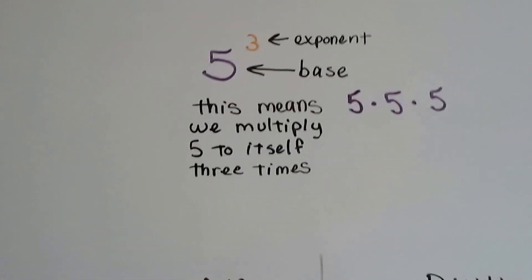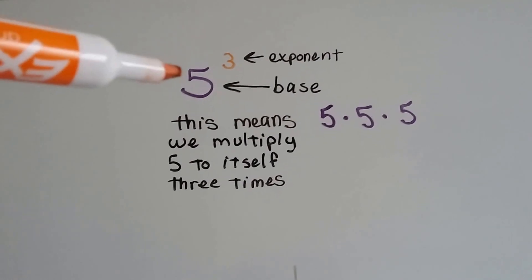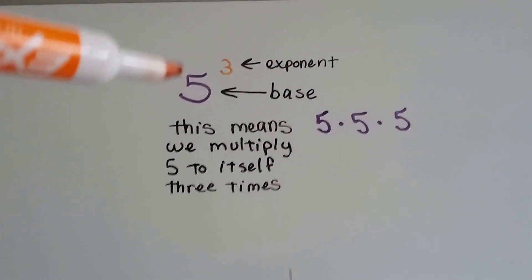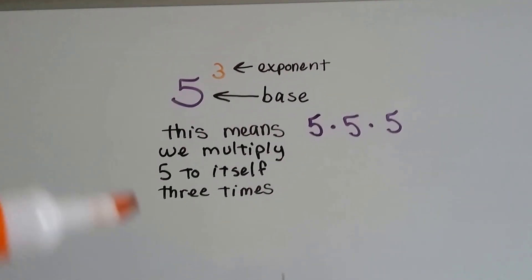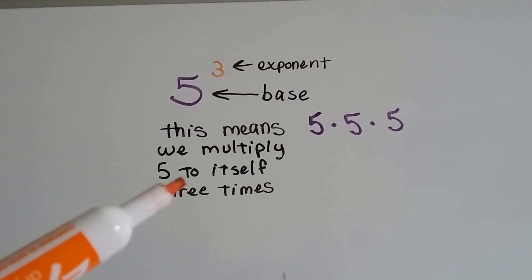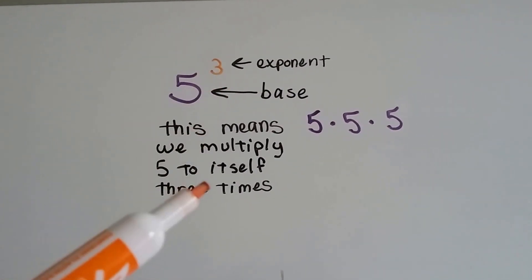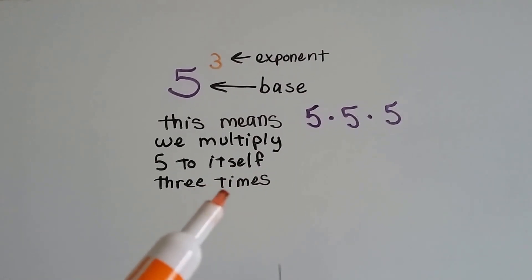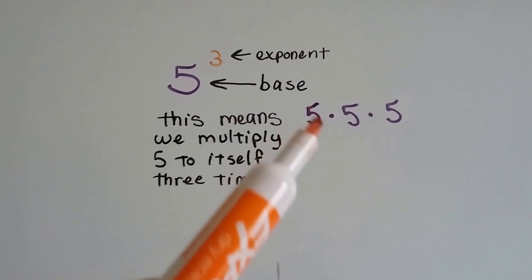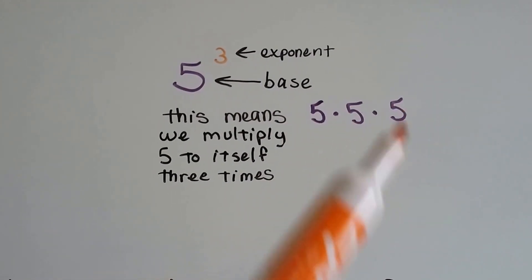We've got a base number — that's our 5 — and our exponent, that's the 3. The exponent just means how many times we're going to multiply 5 to itself: 5 times 5 times 5.